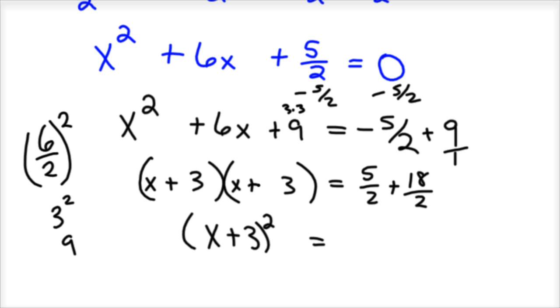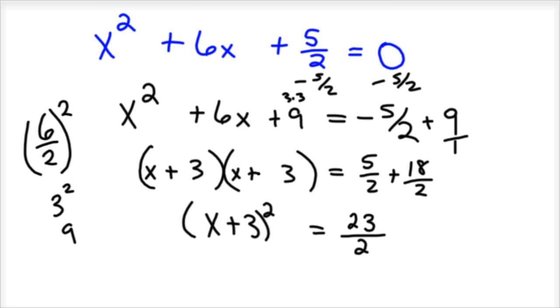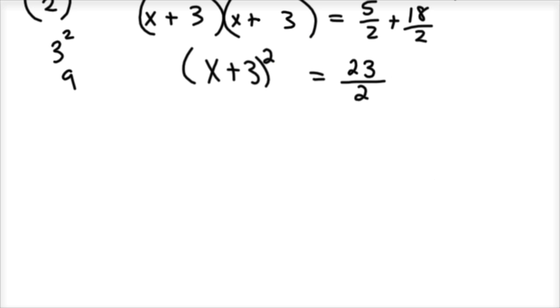And so we'd have 23 halves. That's kind of a nasty looking number. It's going to be ugly, I should say.